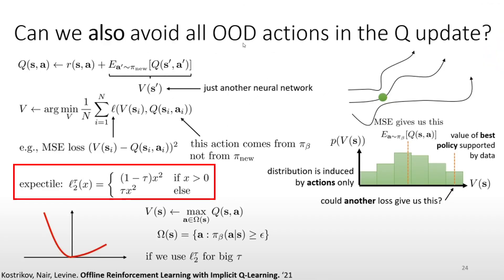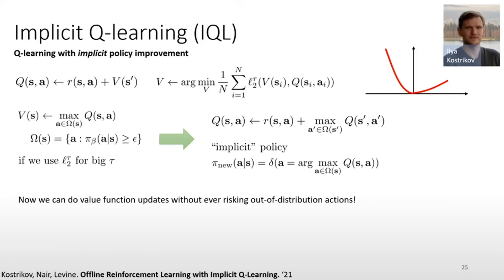Going back to IQL — implicit Q-learning from Kostrikov 2021, shown in Professor Levine's YouTube video — you want to estimate the value function using this loss function. The loss penalizes negative rewards more and penalizes positive rewards less, so the value function doesn't deviate too much from your distribution while still achieving high rewards for good agent performance. The actions used in training come from the behavioral policy up to a threshold.